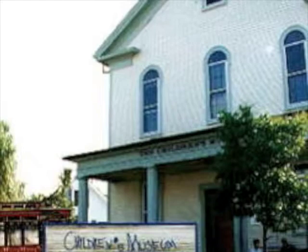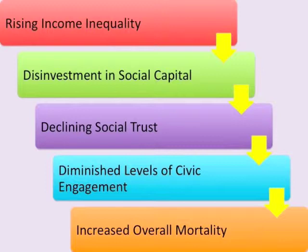To summarize what Kawachi is saying: as there's rising income inequality, there's advancing disinvestment in social capital. This leads to declining social trust, which then in turn leads to diminished levels of civic engagement. And finally, we see an association with increased overall all-cause mortality.